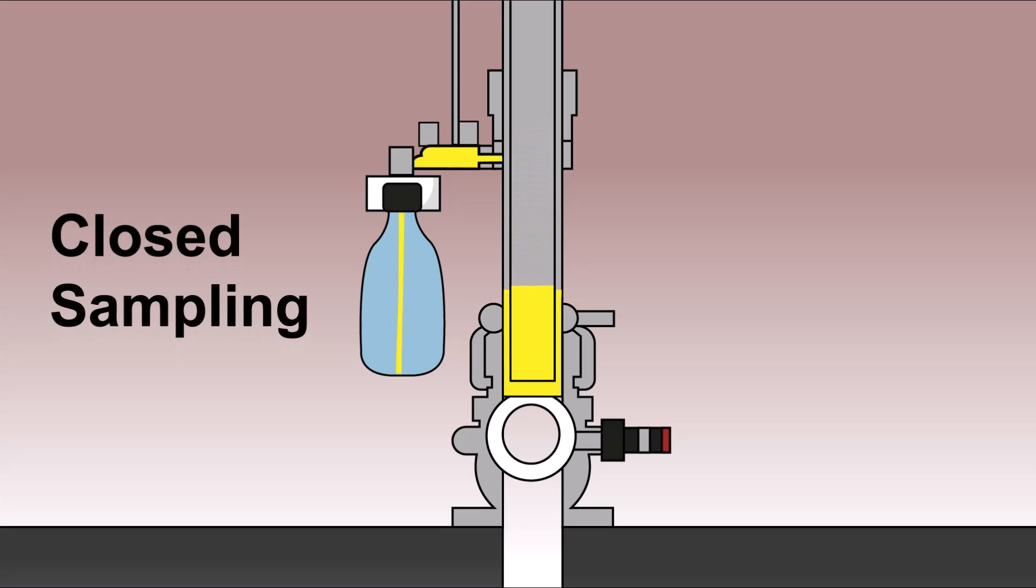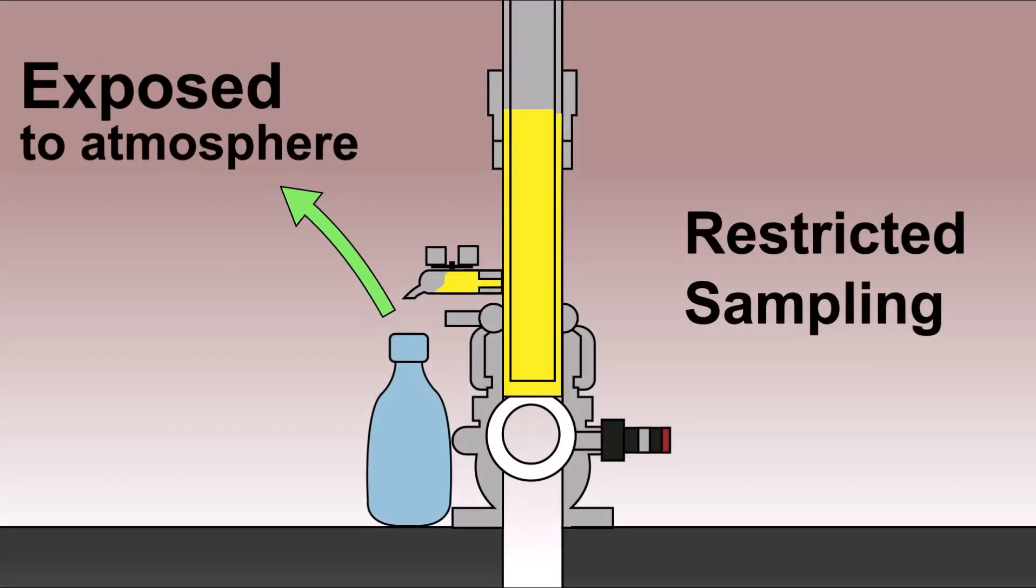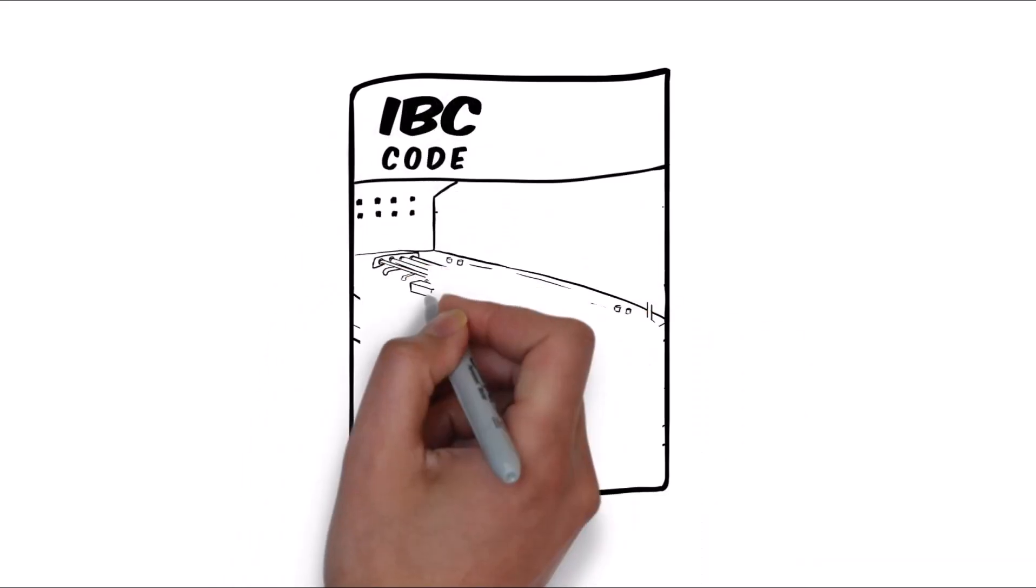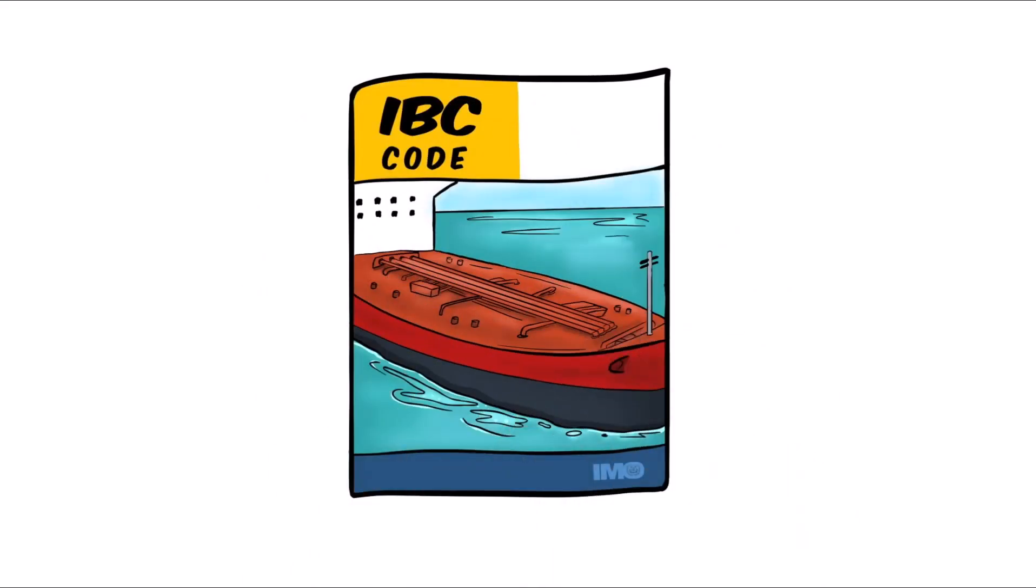A trained ship's crew member acts as the owner's representative alongside the charterer's representative surveyor. If joint sampling is not possible, the crew must always take samples as per the vessel's SMS procedures. Cargo requiring closed gauging as per the IBC code will also require closed sampling.